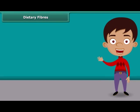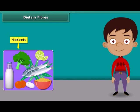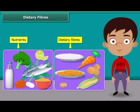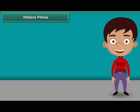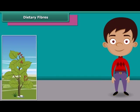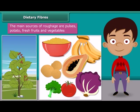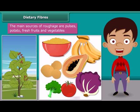Dear friends, do you know that besides nutrients, dietary fiber also plays an important role in our body? They are usually known as roughage. Roughage does not provide any nutrition to our body but adds bulk. They are found only in plants — pulses, potato, fresh fruits and vegetables are the main sources of roughage. This helps our body to get rid of undigested food.